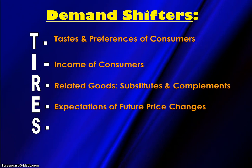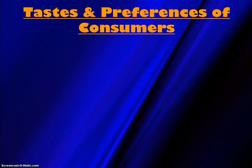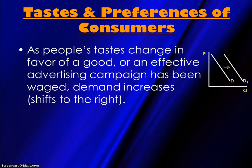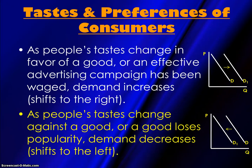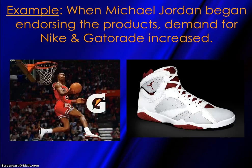Here are the possible demand shifters — TIRES is an acronym to help you remember these categories. These are the only things that will cause a demand curve to move to the right or left. T stands for Tastes and Preferences of Consumers. As people's tastes change in favor of a good, or an effective advertising campaign has been waged, demand increases or shifts to the right. As people's tastes change against a good, demand decreases or shifts to the left. For example, when Michael Jordan began endorsing products, demand for Nike and Gatorade increased. Companies will often get celebrities to endorse their products to try to increase demand.